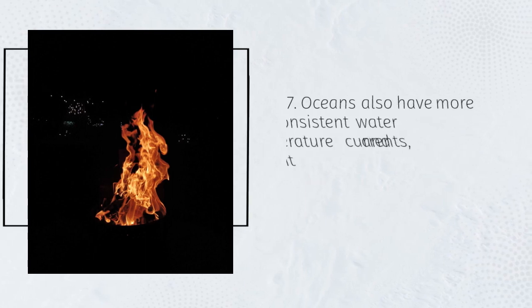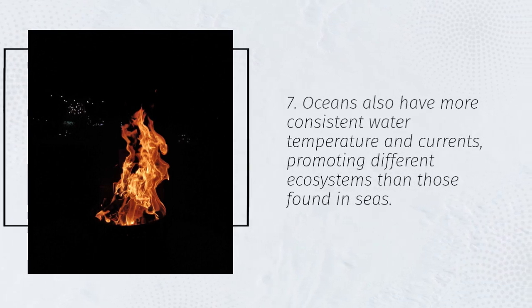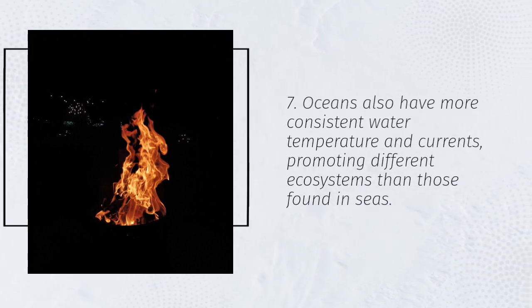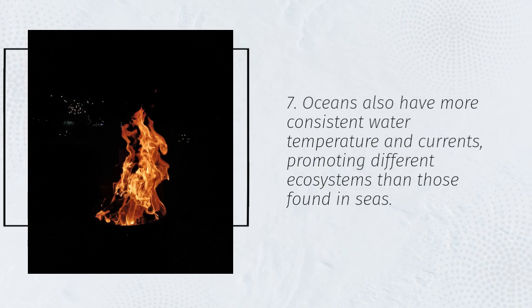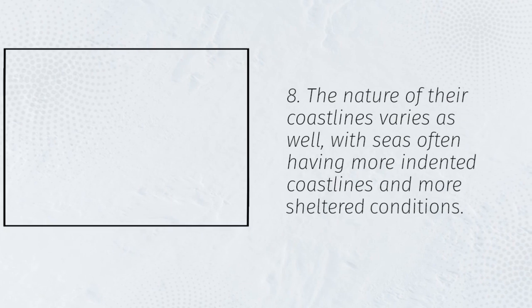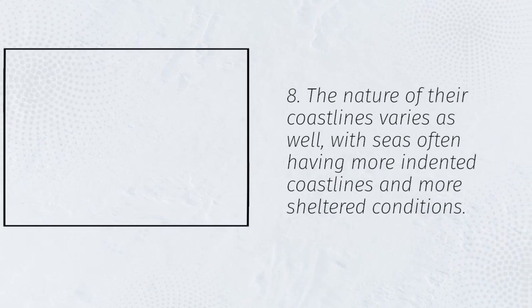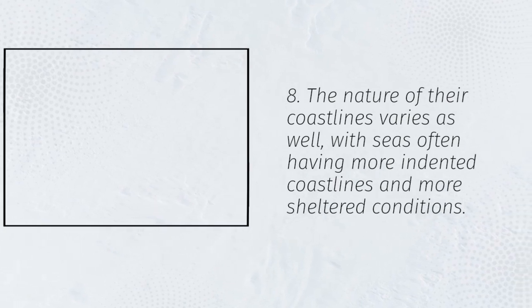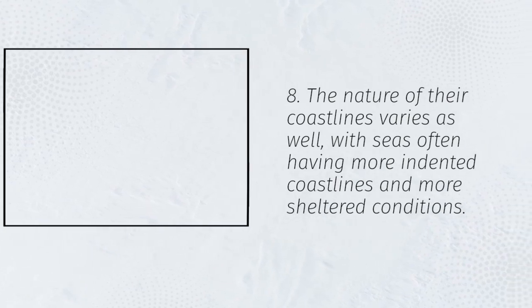Oceans also have more consistent water temperature and currents, promoting different ecosystems than those found in seas. The nature of their coastlines varies as well, with seas often having more indented coastlines and more sheltered conditions.